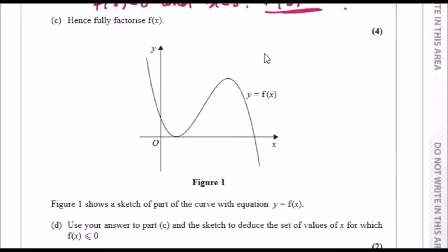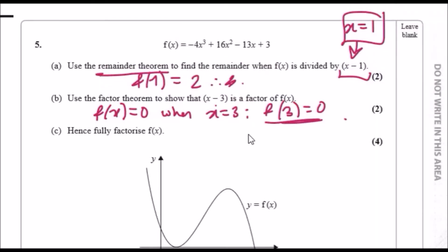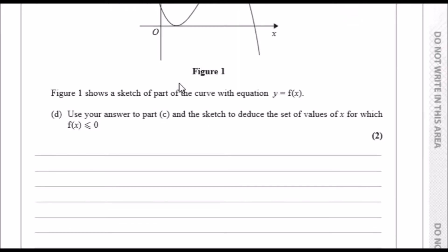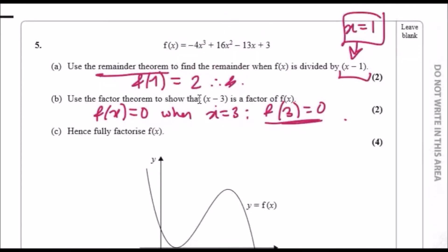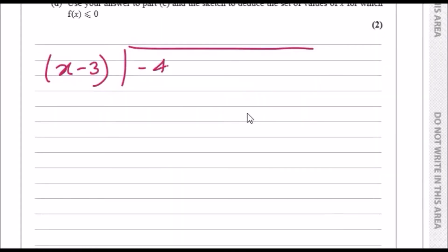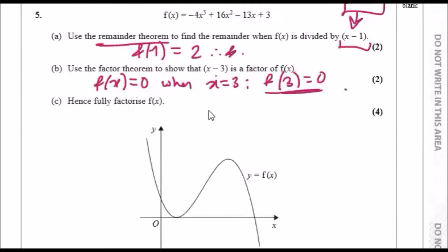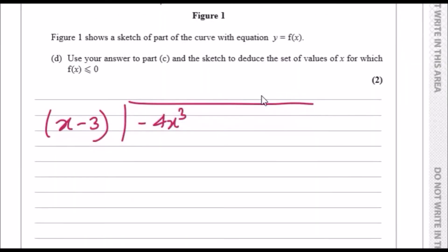Now part (c), hence fully factorize the equation. Since we know that x minus three is one factor, we actually need to find a quadratic factor from this to get two more factors. The only way, or at least the safest way to do this, is to actually use the long division method. So using long division, let's say x minus three can be divided into, copying this carefully, minus 4x³ plus 16x² minus 13x plus 3.